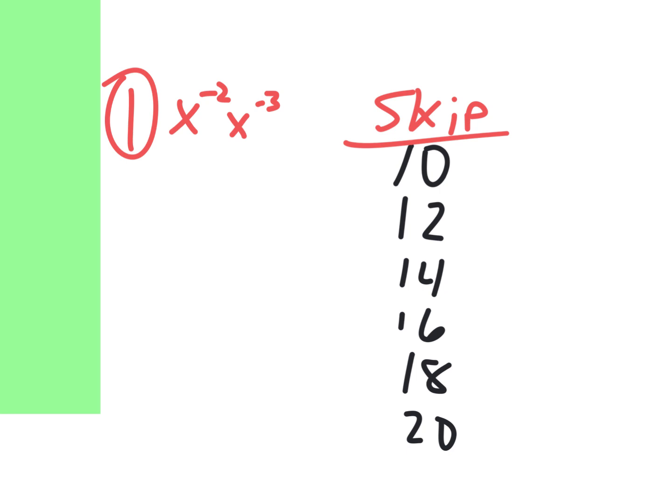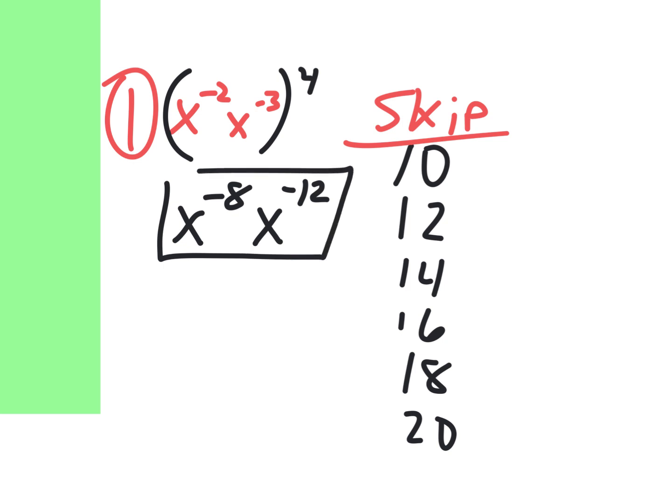So first off, I can do the power first and I multiply on this kind, but I can't leave my answer as X to the negative eight, X to the negative twelve. I mean that's not illegal, but I can't leave it that way. The next thing I can do is put them together and that's X to the negative twenty, but I can't leave it that way. So what's the final answer?